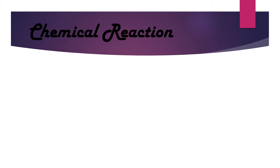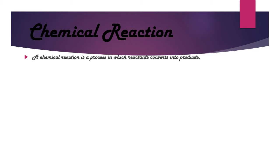So what is basically a Chemical Reaction? A Chemical Reaction is a process in which a reactant converts into a product. It is not necessary that always two or more things combine to form a product — it may be a breakdown to form the product. So a Chemical Reaction is when a reactant is converting into a product.